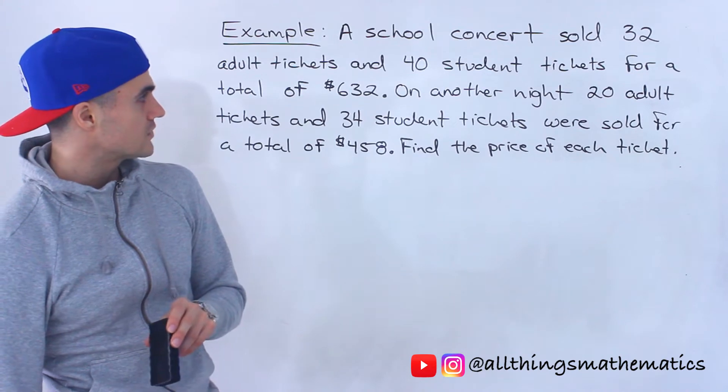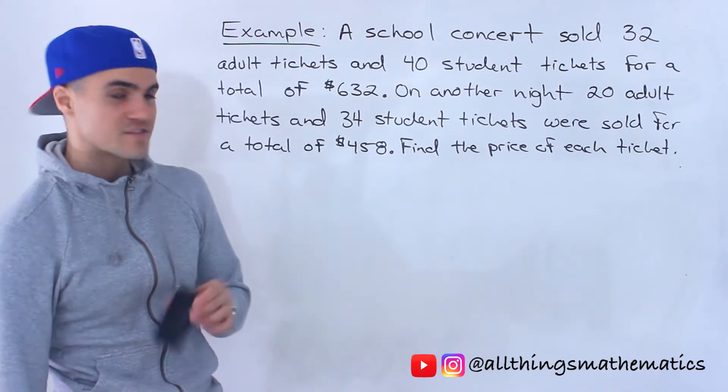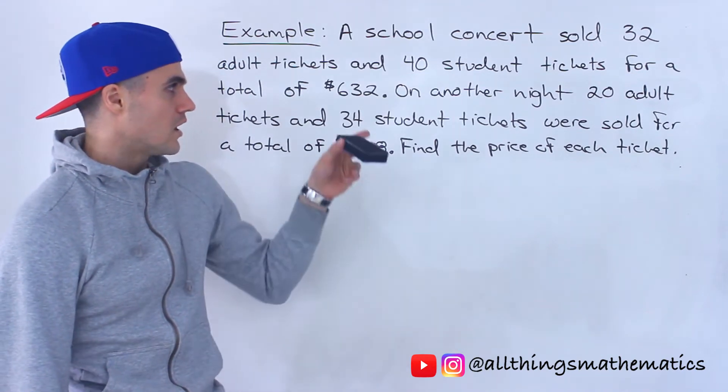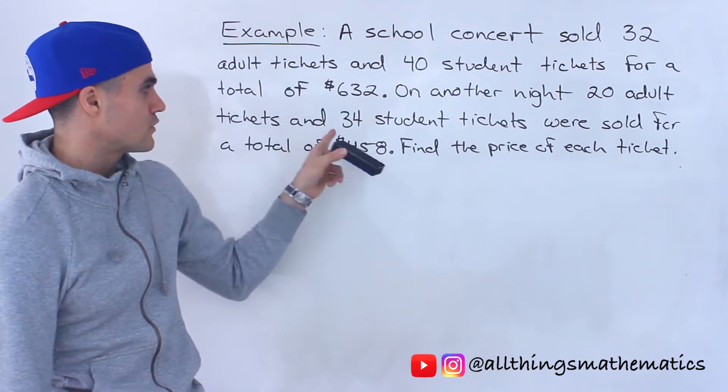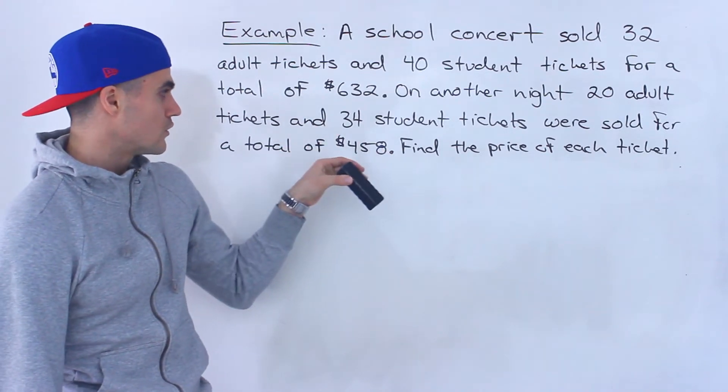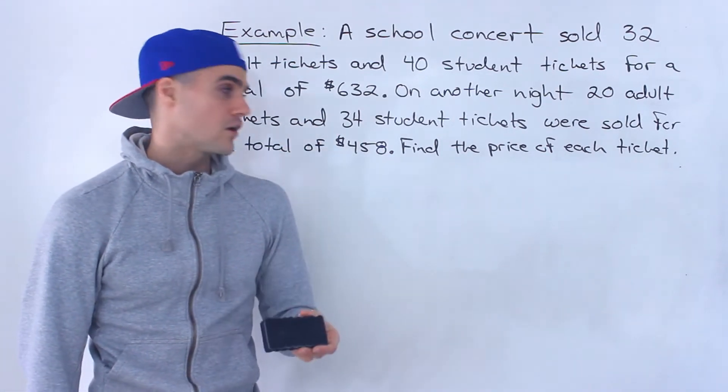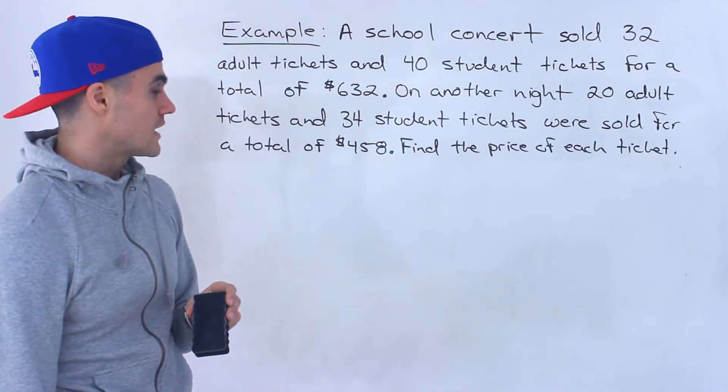A school concert sold 32 adult tickets and 40 student tickets for a total of $632. On another night, 20 adult tickets and 34 student tickets were sold for a total of $458. We have to find the price of each ticket.